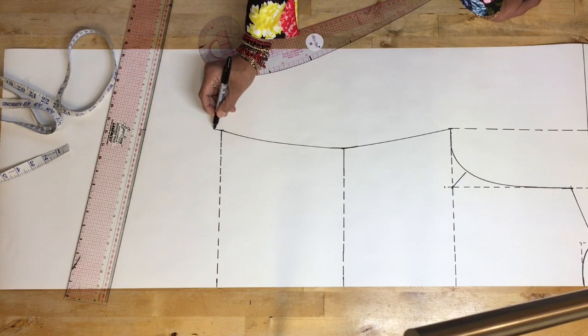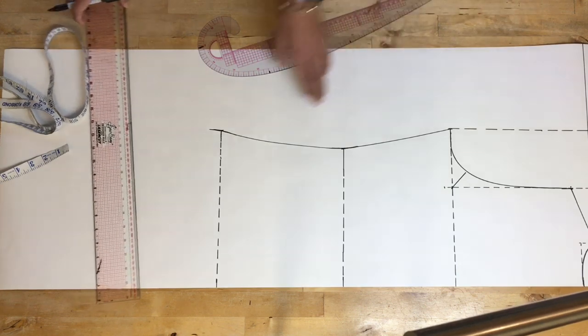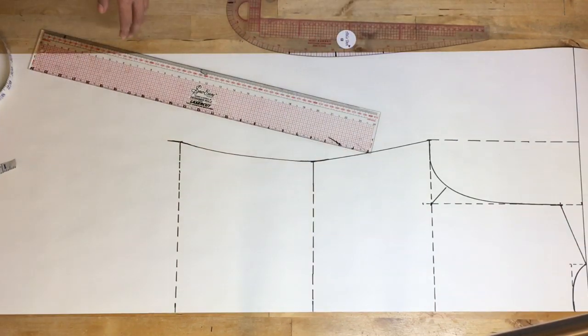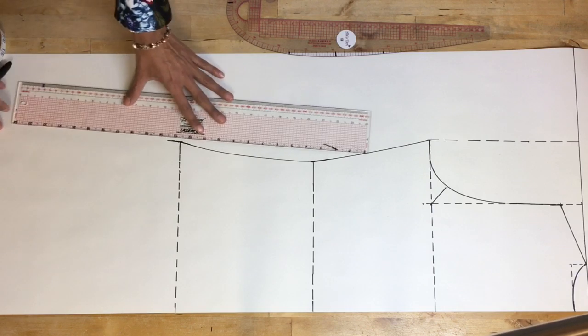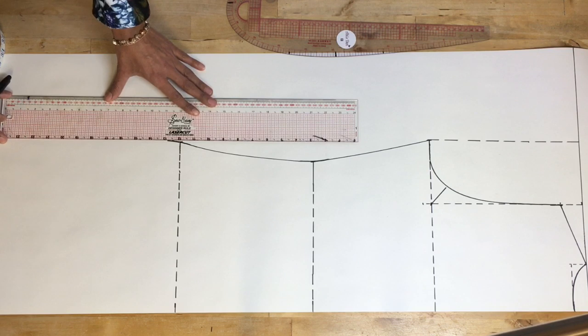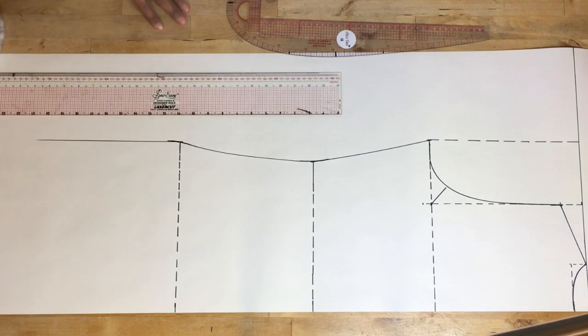And then the same thing's going to happen here. We're curving this out because now what happens is once we've hit our hips, we're going down to streamline our legs down, aren't we? So you can now decide what you want to do at this point. Do you want a straight skirt? Carry on and make the dress as long as you want.